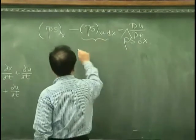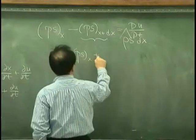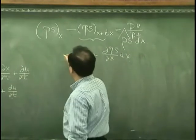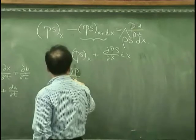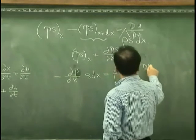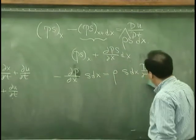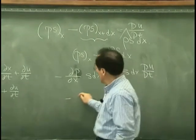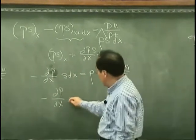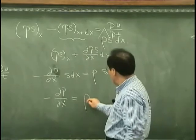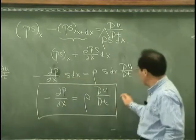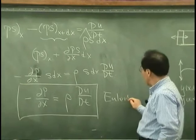And this is PS X plus DPS/DX times DX. So we have minus DP/DX times SDX is equal to rho SDX DU/DT. Therefore, what I have is the relation between the pressure gradient, that is DP/DX, is equal to, has to be balanced by rho DU/DT, that we call general Euler's equation.